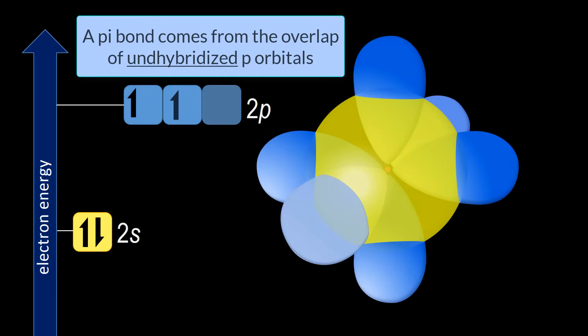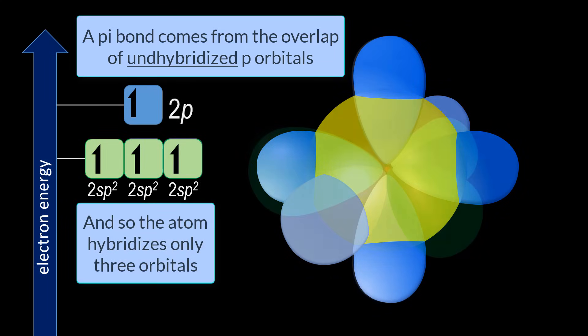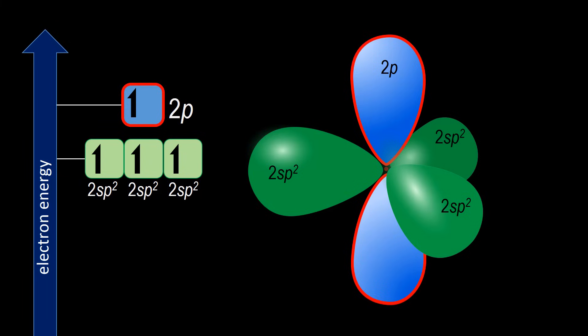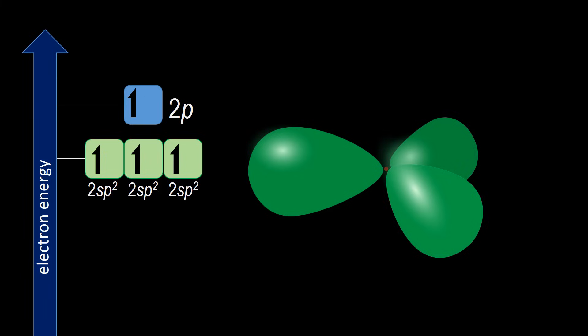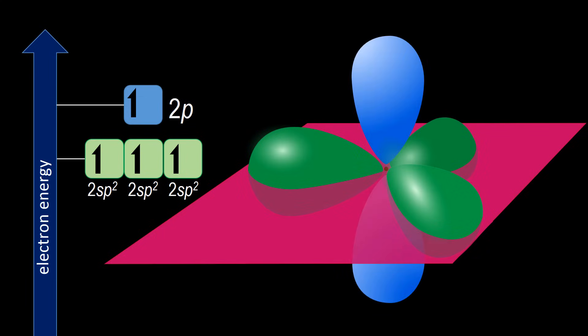A pi bond comes from the overlap of unhybridized p orbitals, and so the atom hybridizes only three orbitals, leaving a p orbital unhybridized for the pi bond. The hybrid orbital is called 2sp2, the superscript 2 denoting that only two 2p orbitals have contributed to the hybridization. The 2sp2 hybrid orbitals exist in a plane perpendicular to the unhybridized 2p orbital. Let's remove the 2p orbital for now to more easily see that. The 2sp2 hybrid orbitals are spread out at a 120 degree angle, which means that they exist in a plane, and the plane is perpendicular to the unhybridized 2p orbital.